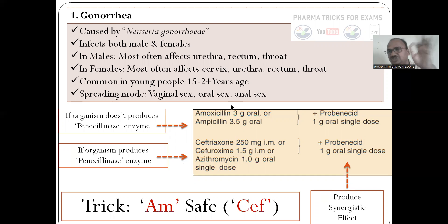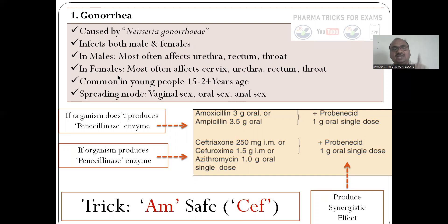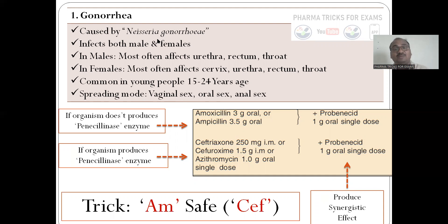Gonorrhea is caused by Neisseria gonorrhoeae. It infects both males and females. In males, it commonly affects the urethra, rectum, and throat. In females, the urethra, rectum, throat, and additionally the cervix. It is common in young people aged 15 to 24 years. Spreading occurs through vaginal, oral, and anal sex. Different strains exist — some gonorrhea organisms produce the penicillinase (beta-lactamase) enzyme, which breaks down the beta-lactam ring.